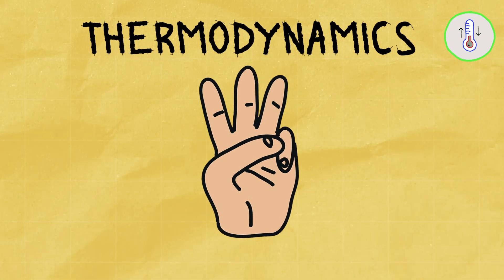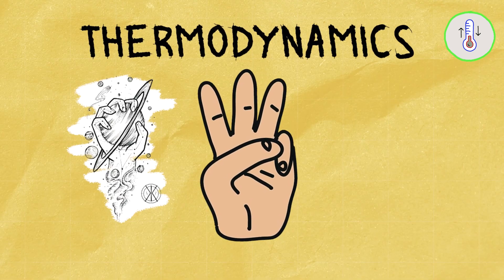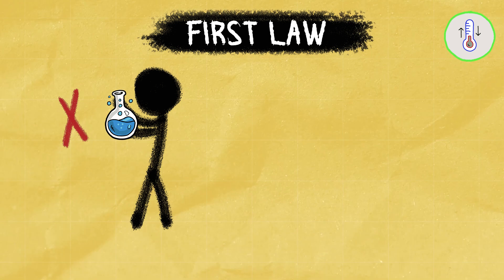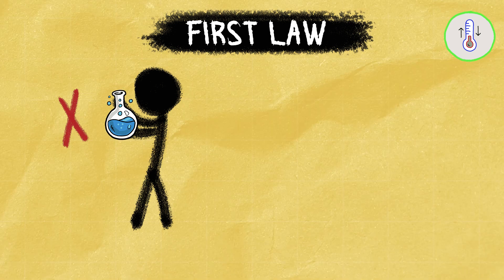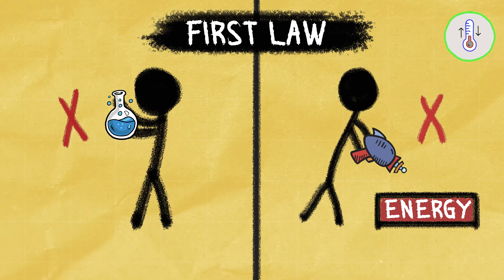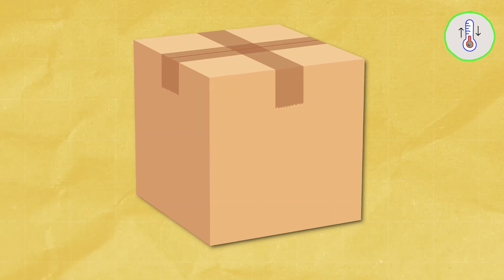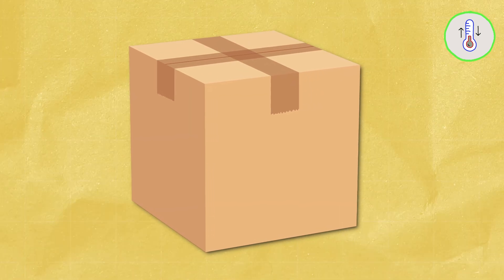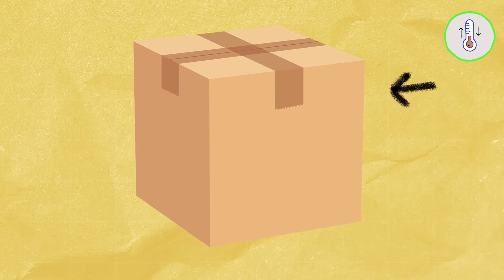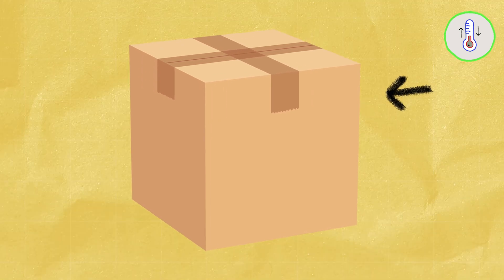Thermodynamics has three fundamental laws that govern the universe, like cosmic rules. The first law says energy can neither be created nor destroyed, which we already know from our previous discussion. The total amount of energy in an isolated system, think of a closed box, always stays constant.